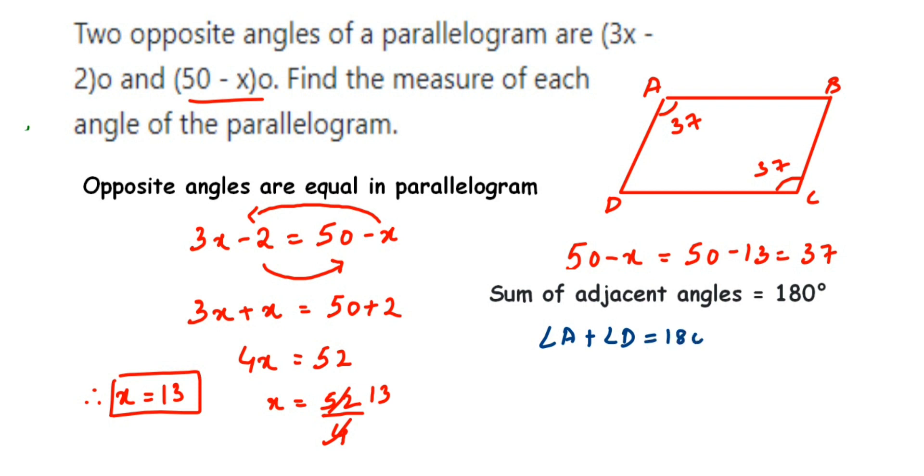Angle A is 37°, so 37 + angle D = 180°. Now transpose 37 to the other side. Since it has a plus sign, when transposed it comes as minus.